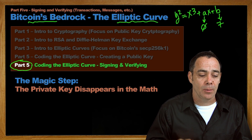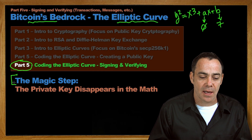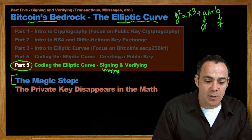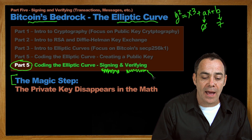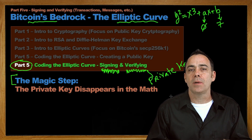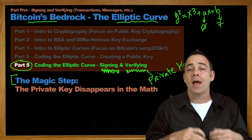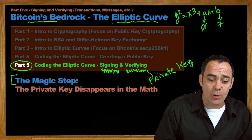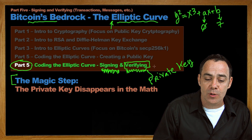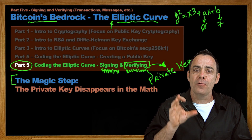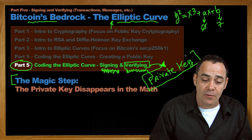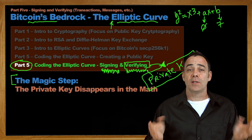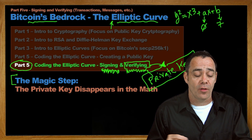Specifically, once you have the public key, you can do this thing we call the magic step where you've signed the transaction or message, and now you are going to verify it — but without having the private key. By simply having the public key, a hash of the message, and all the parameters of the elliptic curve, you can actually verify whether the message was sent by the person with the private key and know for sure they possess it. So let's jump into the code and start taking a look at how all this happens.